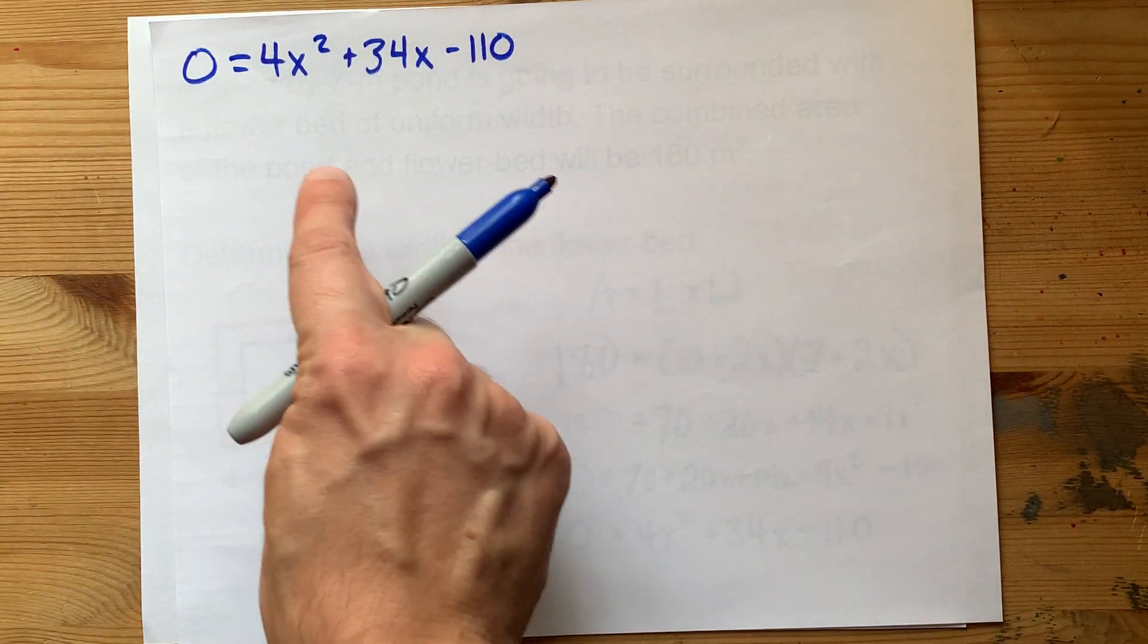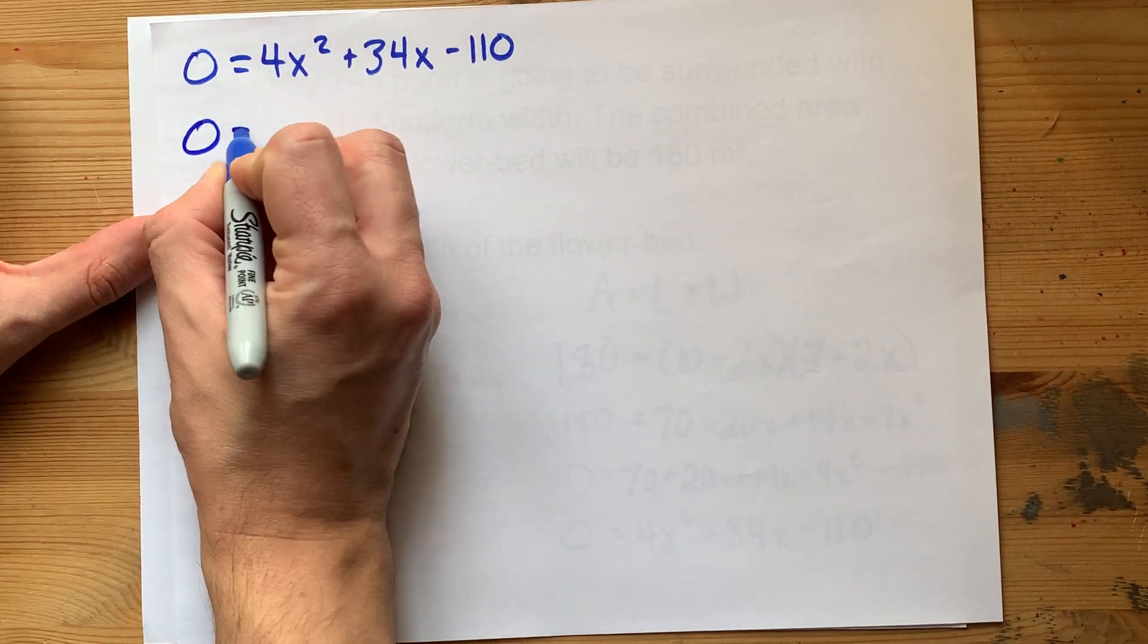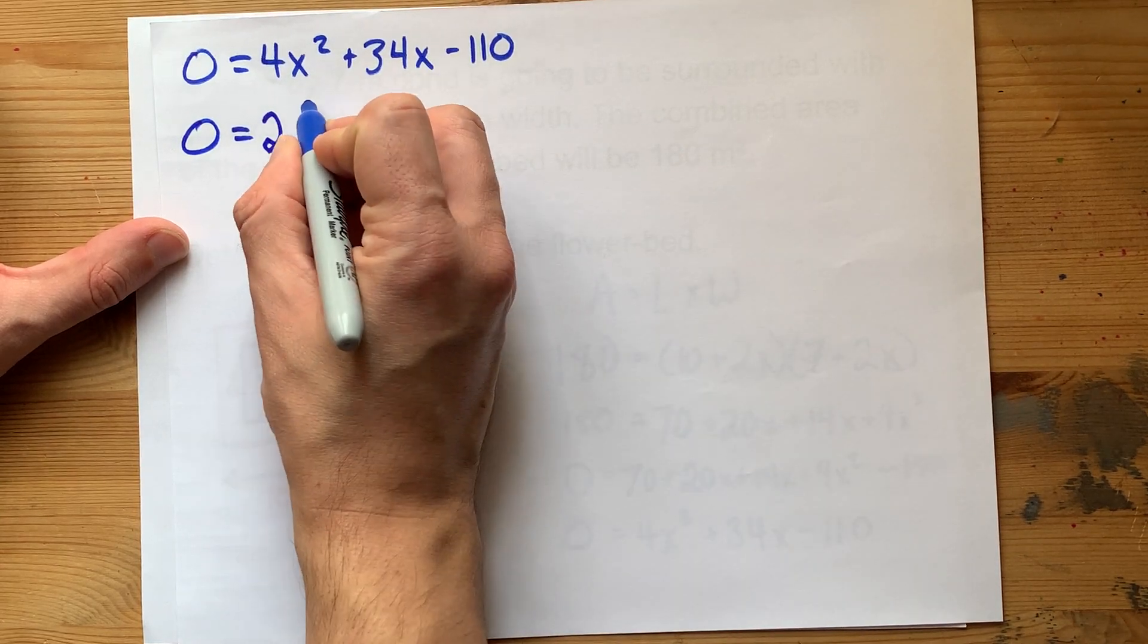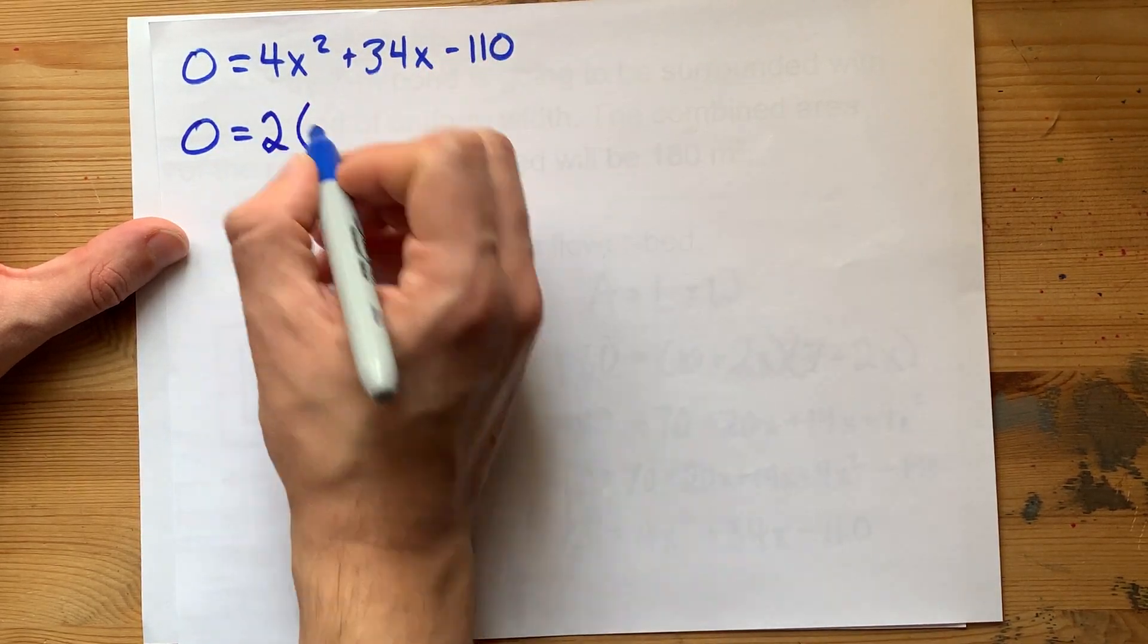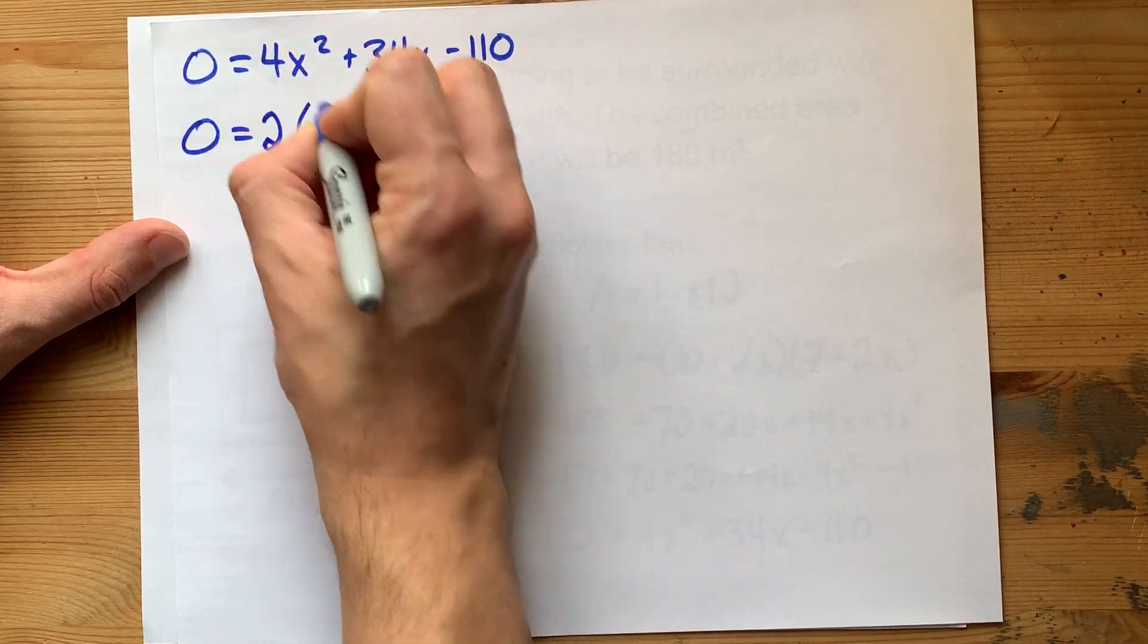Factoring works too. There's a greatest common factor you can pull out of these terms. They're all even, so I can divide them all by 2. When I factor 2 out of all of these, I'm dividing each term by 2.